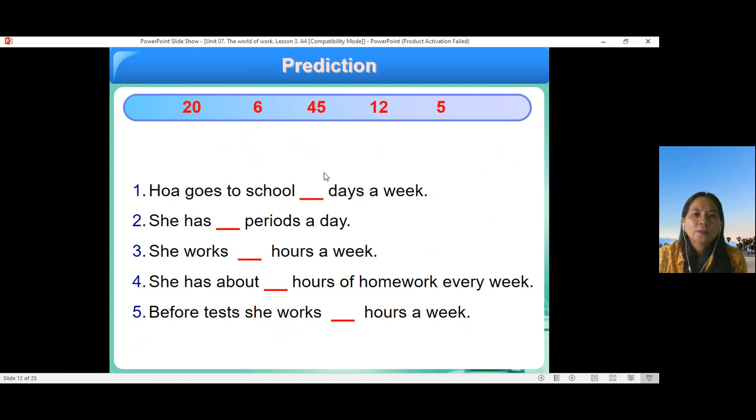Xong bài đọc xong. Các bạn làm cho cô điền cho cô thông tin phía dưới. Cô có là. Hoa go to. Cô có một số number trên đây. Các bạn điền dùng cho cô. Coi thử là bao nhiêu. Giờ bao nhiêu ngày. Bao nhiêu tiết. Ở trong cái tiết này. Hoa go to school day a week. She has periods day. She works hour a week. She has about hour of homework every week. Before tests she works hours. Chúng ta hoàn thành dùng cô. Rồi.